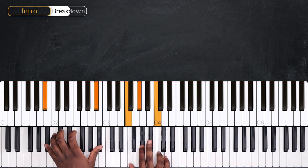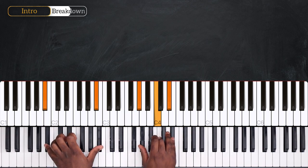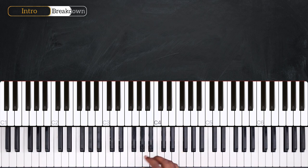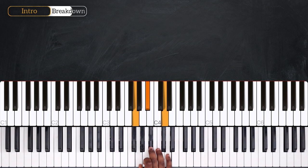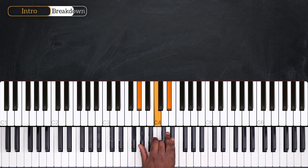Then for F minor over Bb, we're starting right hand with F minor, moving up on G minor with G, Bb and D. Moving up again by one half step on Ab major. Ab, C, Eb.